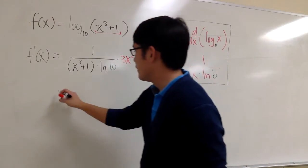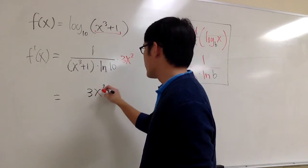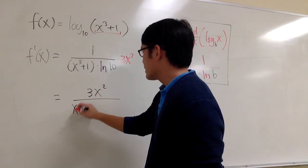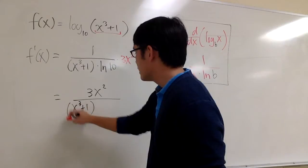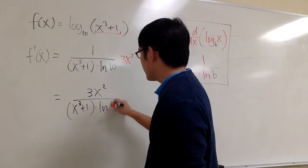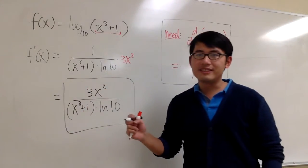So altogether, my final answer is: I can put 3x squared on the top over x to the third power plus 1, and then times ln of the base. This right here will be the answer.